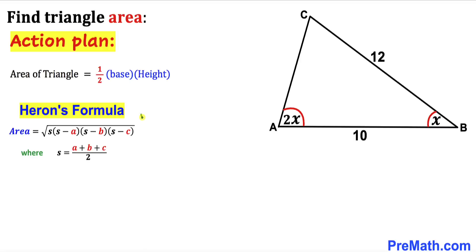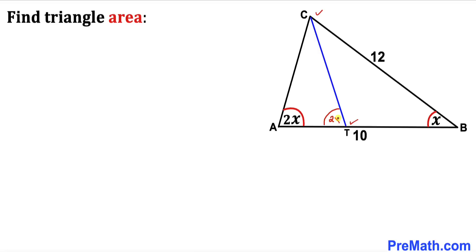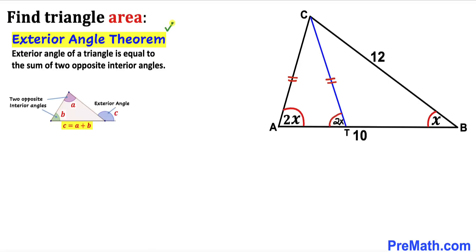Here's our very first step: this angle is X and this angle is 2X. I have connected point C with point T such that this angle is 2X as well. We can now see that triangle ACT is an isosceles triangle, so therefore side length AC is going to be equal to side length CT.